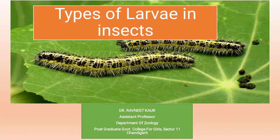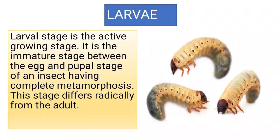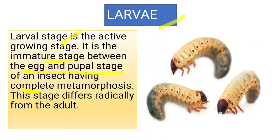Hello students, today we have a new topic: the different types of larvae found in insects. First of all, what is a larva? The larval stage is the most active growing stage in the life cycle of an insect. It is the immature stage between the egg and pupal stage in case of insects which show complete metamorphosis.